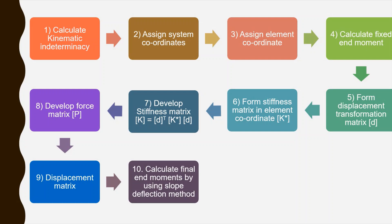After assigning the system coordinates, we assign element coordinates and then calculate the fixed end moments. For fixed end moments, we know the equations for UDL (uniformly distributed loads) and for concentrated loads. Using those equations, we calculate the fixed end moments. The fifth step is to form the displacement transformation matrix, and after that we find the stiffness matrix in element coordinates — the element stiffness matrix — for each member of the frame.